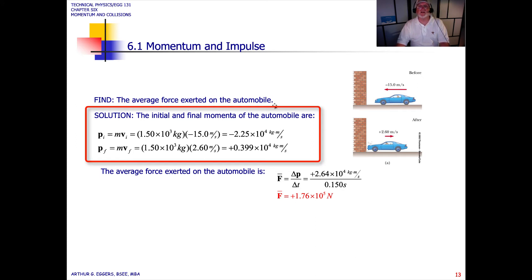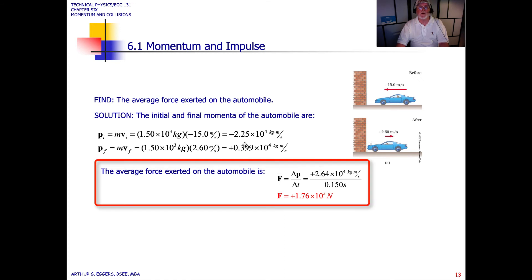Find the average force exerted on the automobile. The initial and final momentum were given. That's what we calculated in the last part of the problem. To calculate the force, we take the solution for the average force, delta P by delta T. We just solved for the delta P as 2.64 times 10 to the fourth kilogram meters per second. We divide it by the interval. The problem told us that we had 0.150 or 15 hundredths of a second. We divide that into the numerator. We get an average force of 1.76 times 10 to the fifth newton. This would be that average force. Remember, that's that rectangle that we looked at in the second graphical problem example.